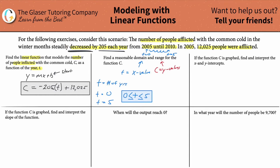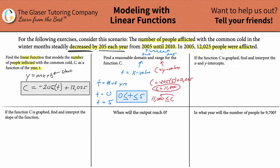How many people will be afflicted at five years' time? We can use our linear equation: C is equal to negative 205 times five plus 12,025. That will tell me the number of people afflicted with a common cold in the year 2010. So negative 205 times five plus 12,025 gives us about 11,000. So this is the minimum number of people that will be afflicted. The range is that the number of people afflicted can be greater than or equal to 11,000 and less than or equal to 12,025.